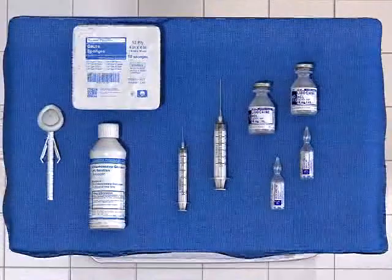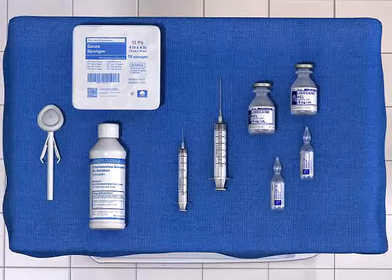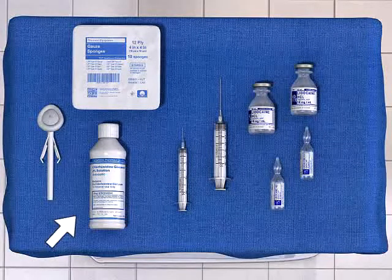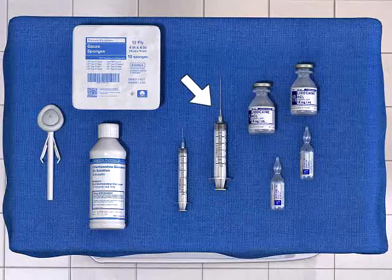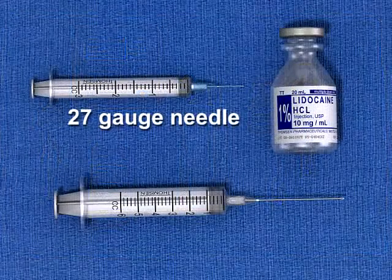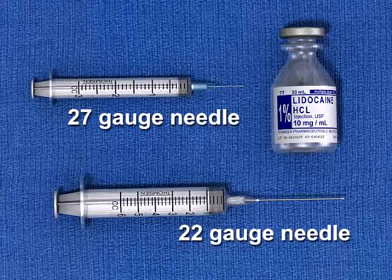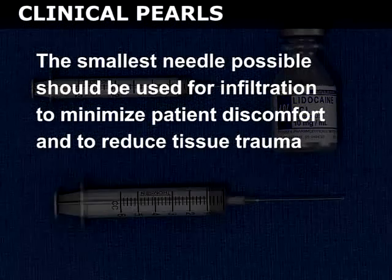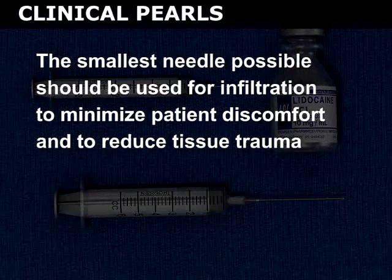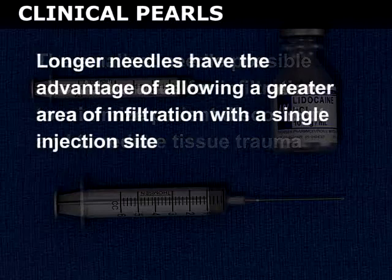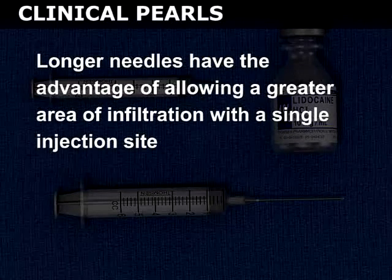Only a few pieces of basic equipment are required for the administration of local anesthesia. These include a skin-cleansing agent such as chlorhexidine, a small syringe, and one or two bevel-tipped needles. 25- to 30-gauge needles are typically used to place a wheal of anesthetic in the skin, whereas larger 20- or 22-gauge needles are used to anesthetize the deeper tissues. The smallest needle possible should be used to minimize patient discomfort and reduce tissue trauma. Longer needles allow a greater area of infiltration with a single injection site.